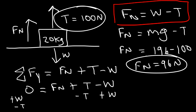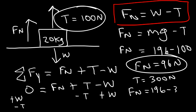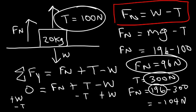Now, let's say the tension force was 300 newtons instead. Using this formula, the normal force would be 196 minus 300, giving a negative answer of negative 104. This means the block is no longer in contact with the ground — it's actually being lifted up because the tension exceeds the weight force, so there is no normal force. If you get a negative answer for the normal force, that means the object is no longer in contact with the ground. But for this example with T = 100 newtons, the answer is 96 newtons.